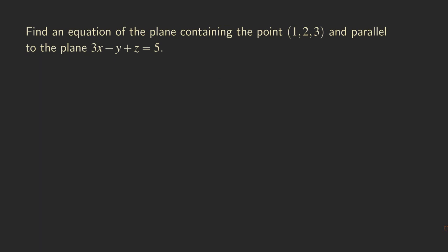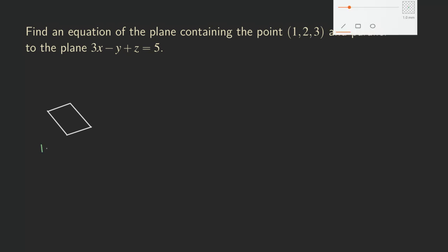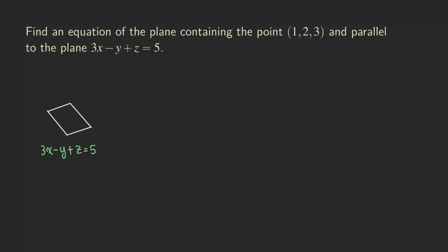Let's talk about the idea on how to solve this problem. It's actually a simple problem. If we have a given plane — so I'm just doing a demonstration here, this is not the plane that we have — for example, let's say the given plane is 3x minus y plus z equals 5. So if we have that plane and we want to find another plane that's parallel to it and containing the point.